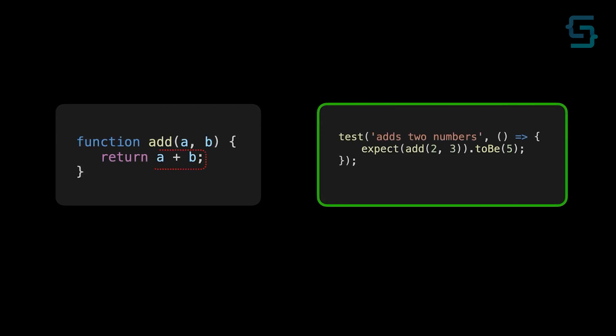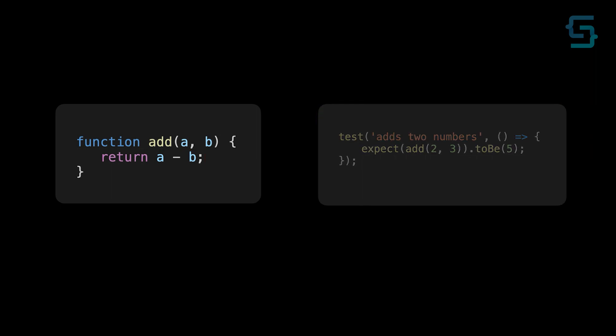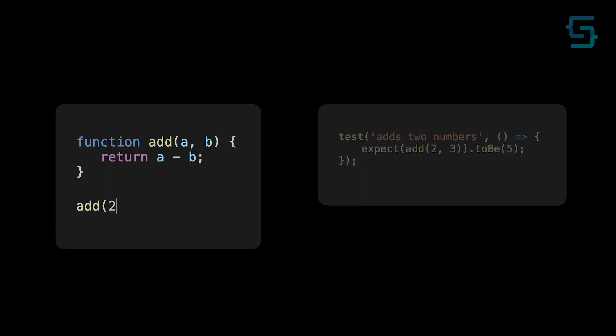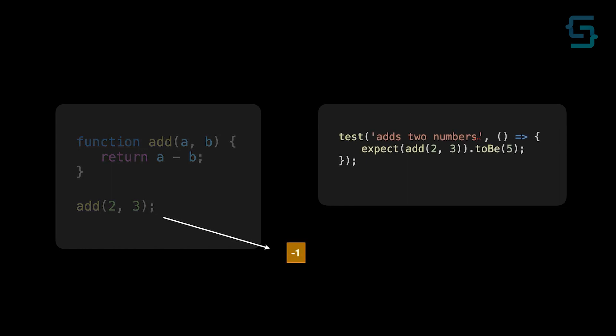But what if we change the logic of our add function and it subtracts instead of adding the values? Now when we call our function with 2 and 3 it will return minus 1, and we would expect it to be 5, which would make our test fail. Now when you understand the basic concept of testing, let's see how we can test React components.